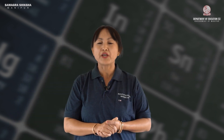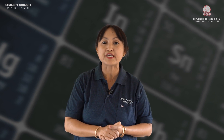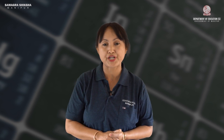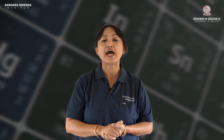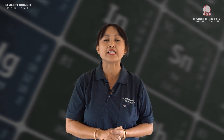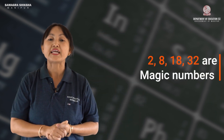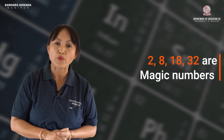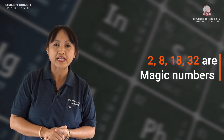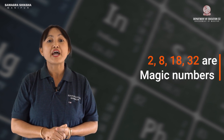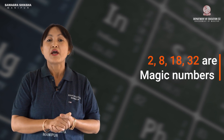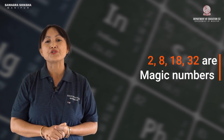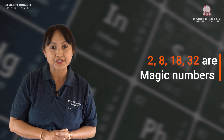The theoretical justification for the arrangement of periods is based on the sequence 2, 8, 18, 32. This sequence of numbers is known in chemistry as the magic numbers.